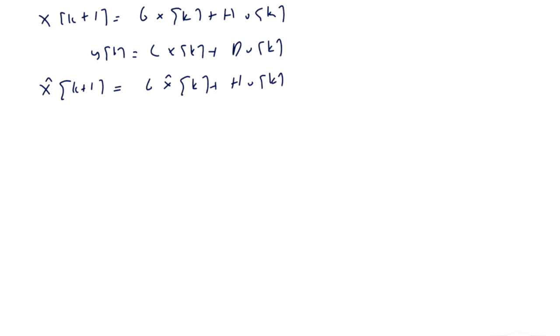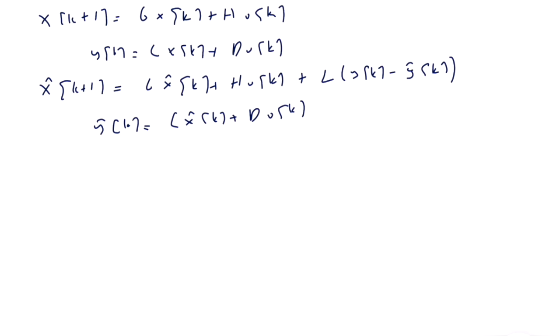The observer equation includes the correction term: plus L·(Y(K) - Y-hat(K)), which is our simulated system. Y-hat(K) is equal to C·X-hat(K) plus D·U(K). And we know that U(K) is equal to minus K times X-hat(K).